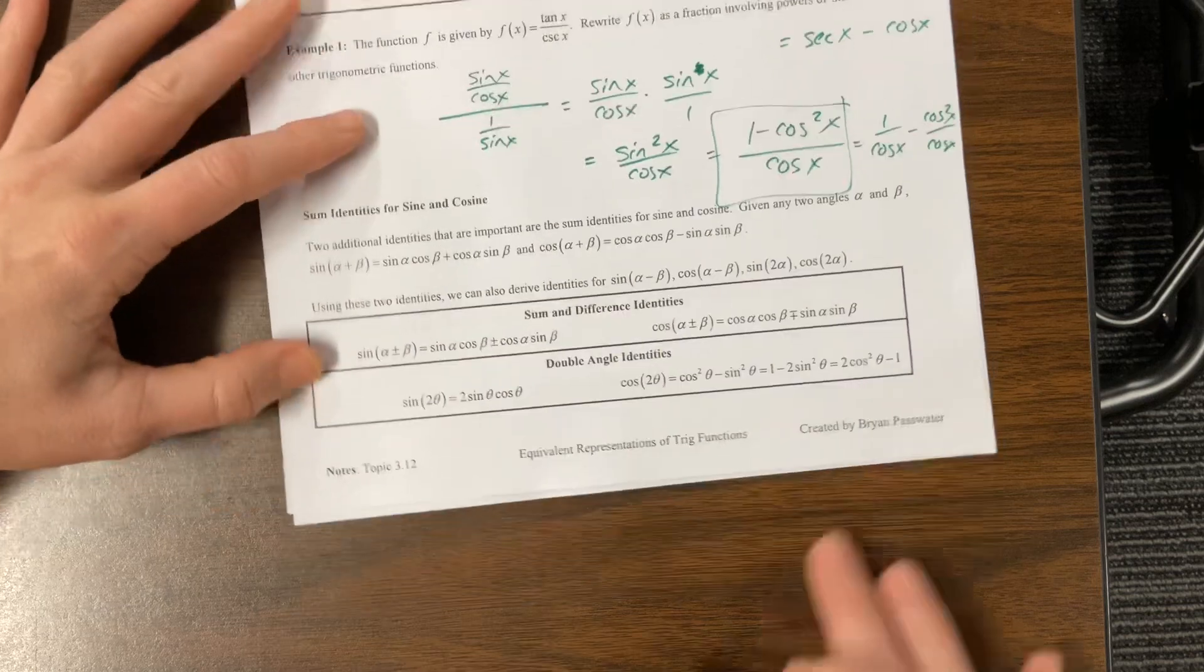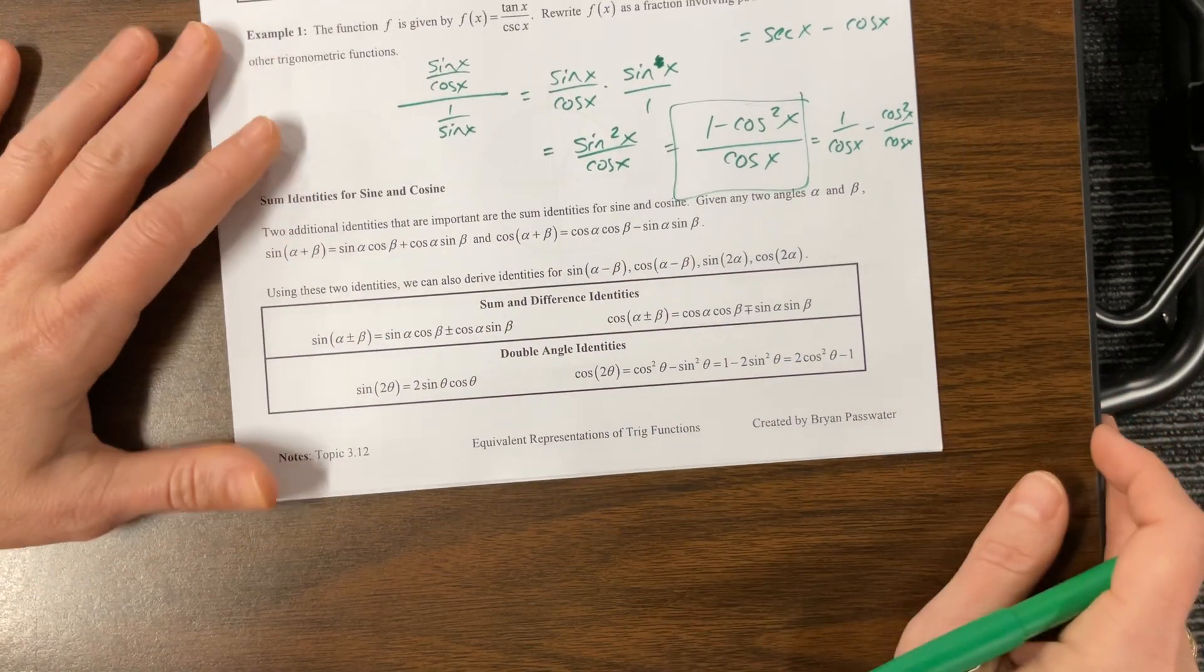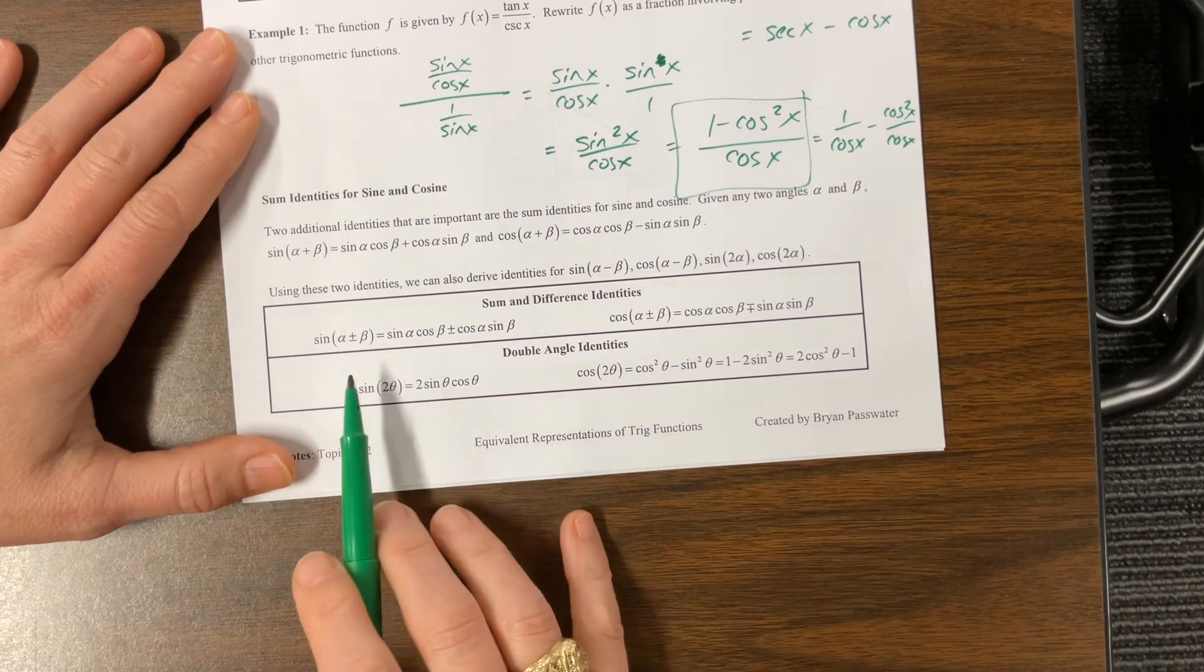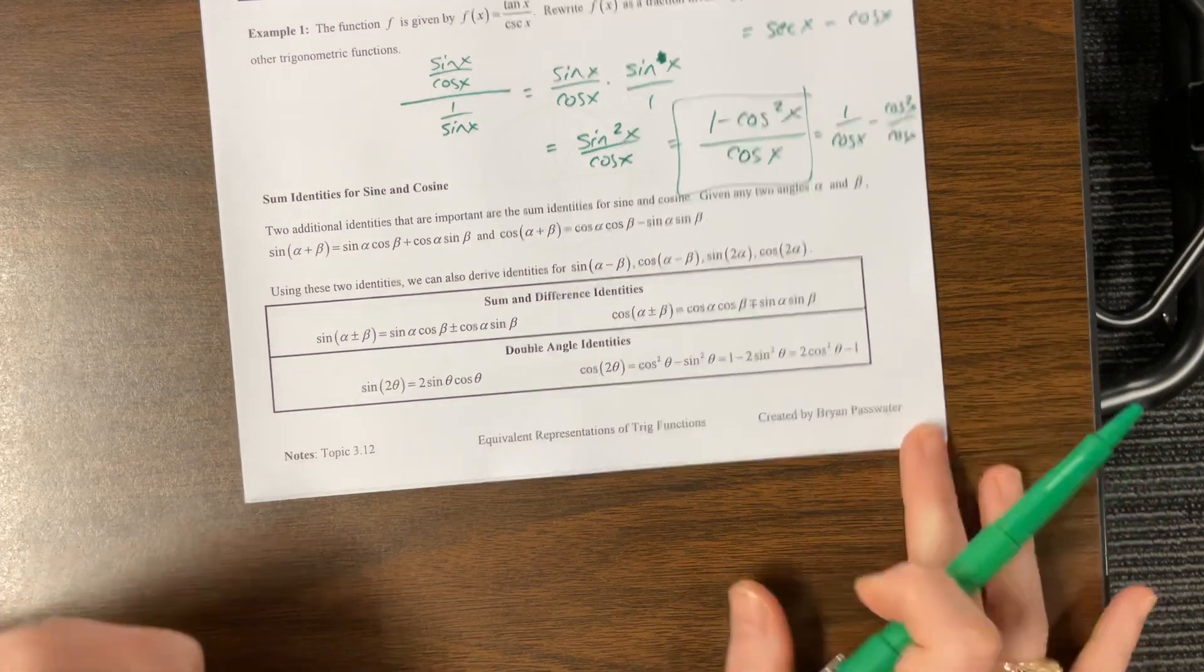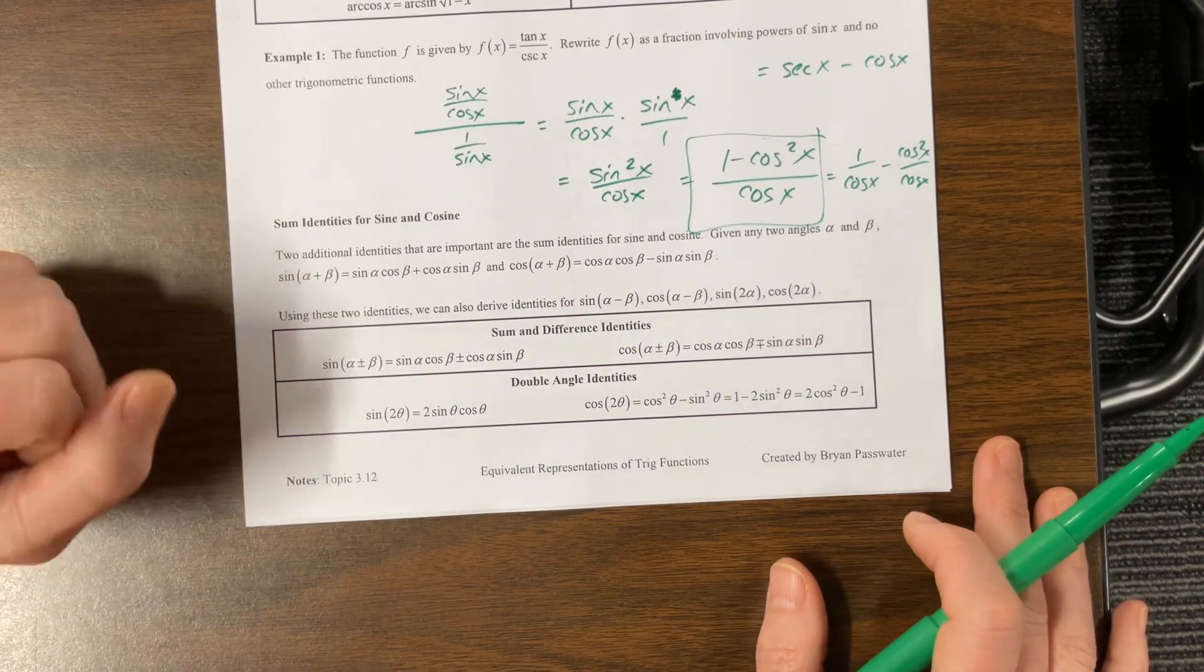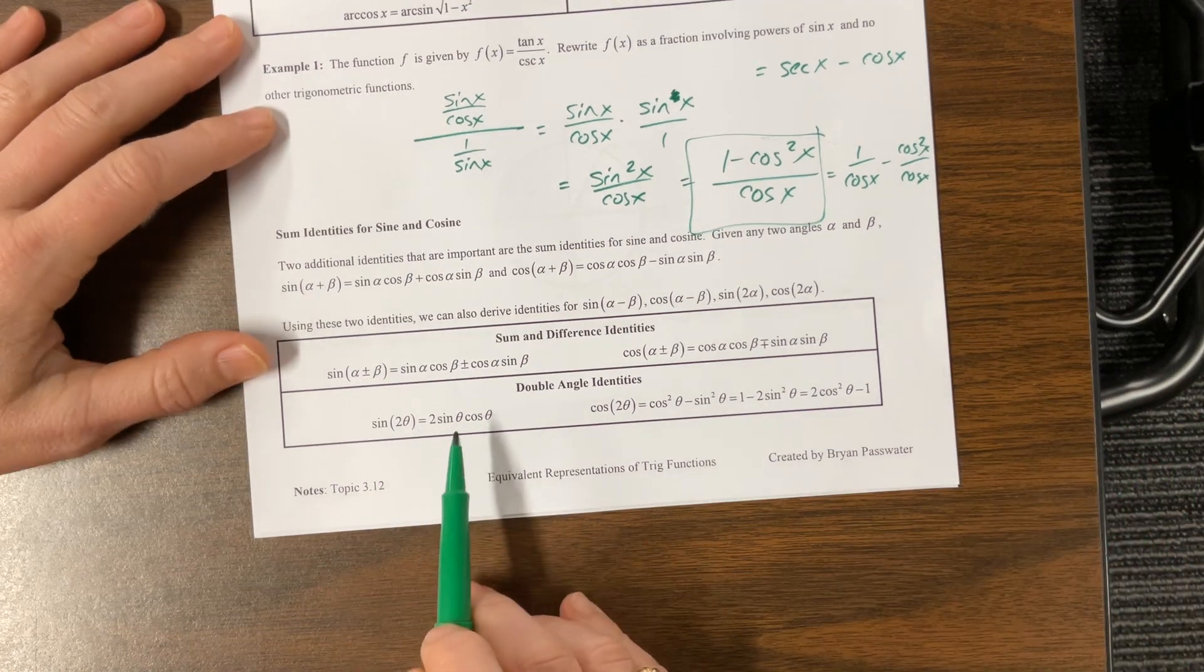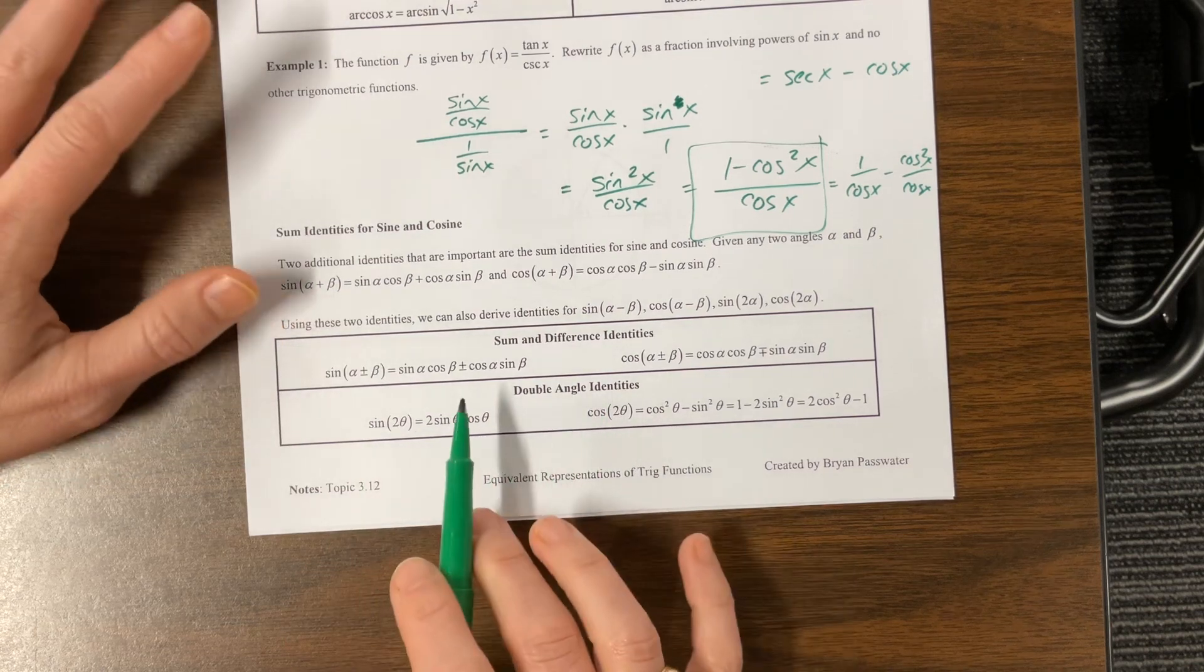Now we're going to get into the sum and difference identities and then the double angle identities. So I have notes on these also. Keep in mind, AP will give you zero, absolutely positively zero formulas on the test, so if you need it, you need to have it memorized.